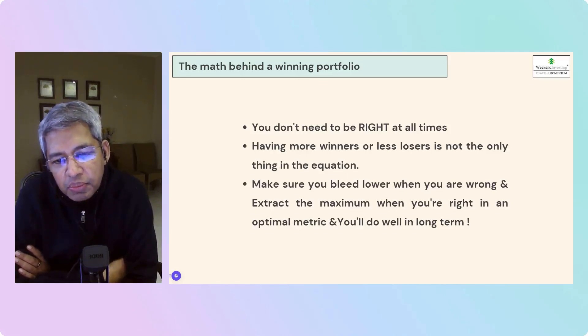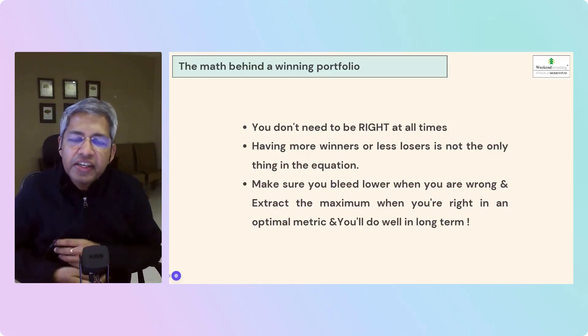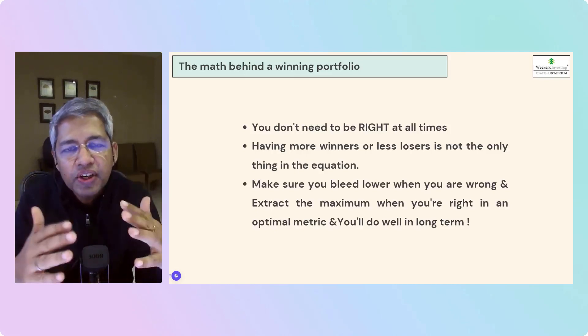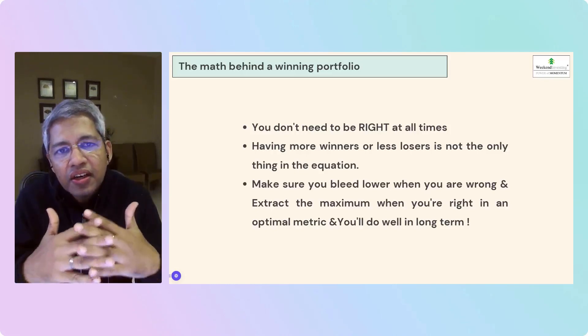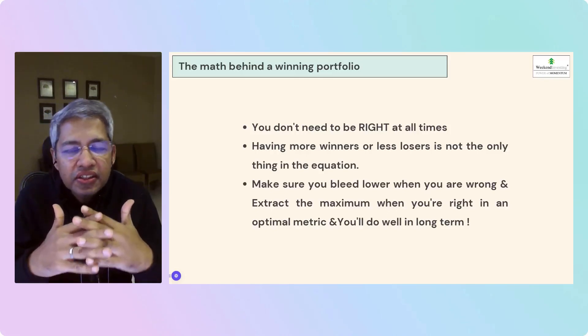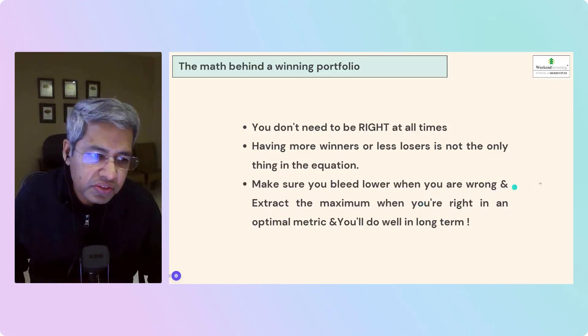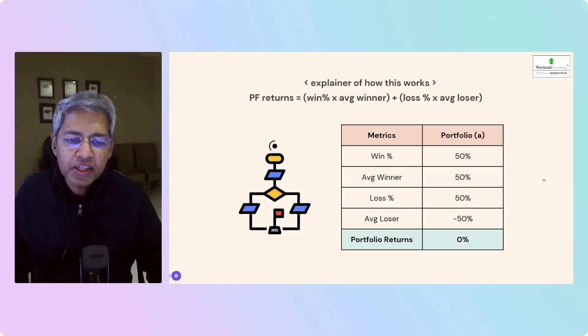This is very simple but somehow very difficult to execute for a lot of people. Once you have a framework, a defined framework, you know what to buy, when to buy, how much to buy, and when to sell. This defined framework will tell you exactly where to exit, exactly where to enter, exactly how much to enter with. This is very optimal metrics to have a very nice peaceful sleep.